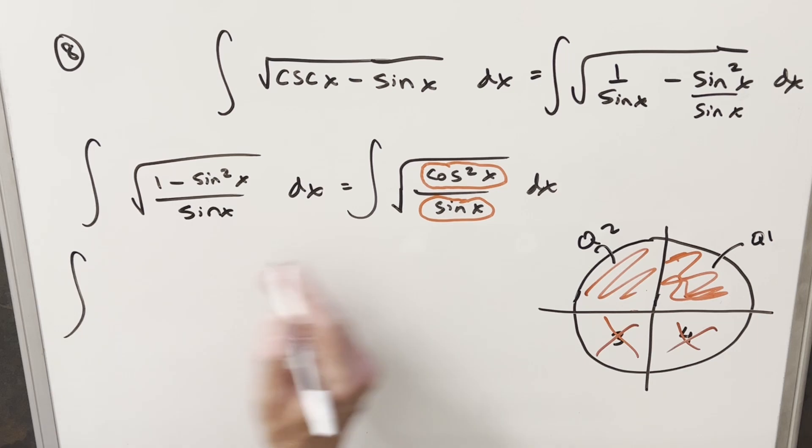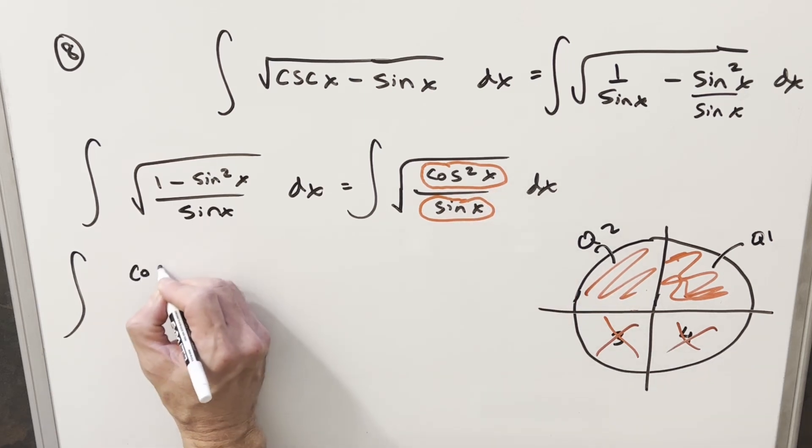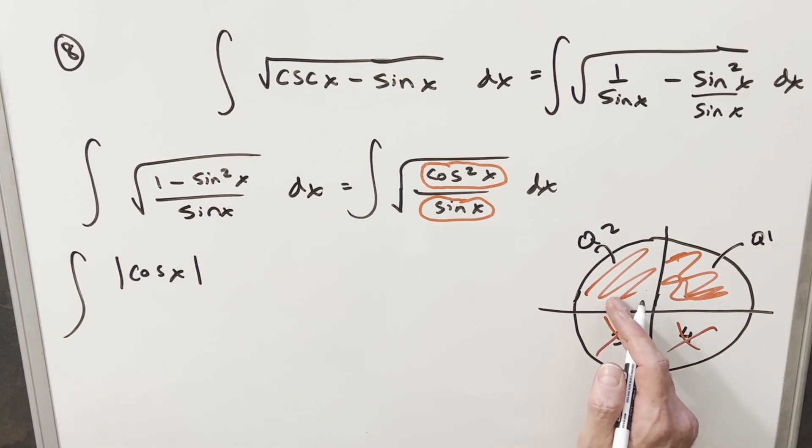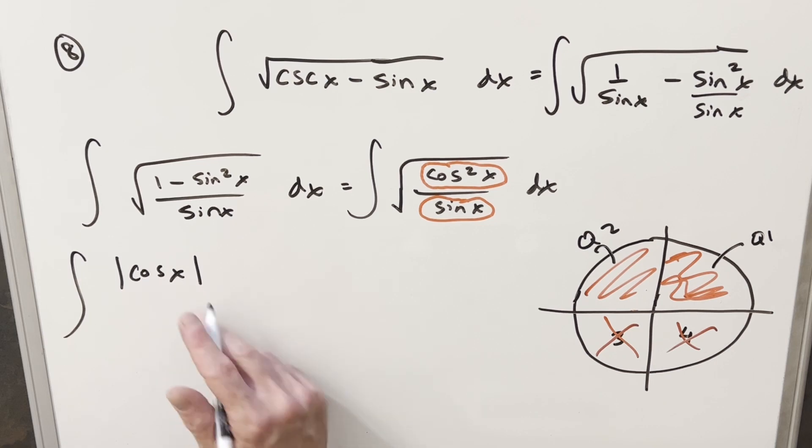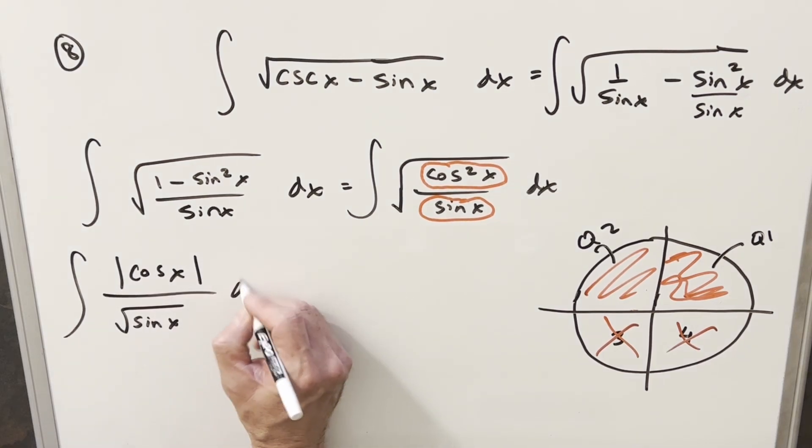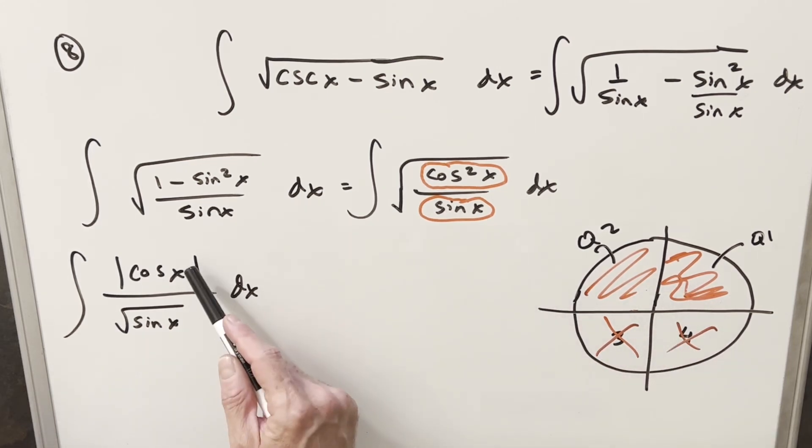So now from here, when I take the square root of cosine squared x, I get cosine x. But now I need absolute value on this thing, because we're including quadrant two, and the values of cosine are negative here. So we actually need to keep the absolute value on it right here, and then we're going to have square root of sine x in the denominator. Now at this point, with the absolute value here, we need to actually break this into cases, because in quadrant one, cosine is going to be positive, and quadrant two, cosine is going to be negative. So we actually have two values for this.